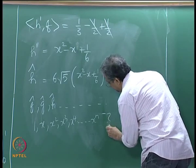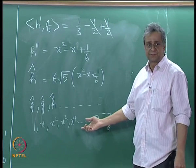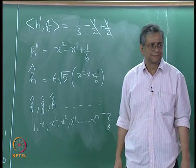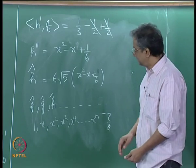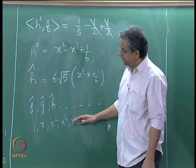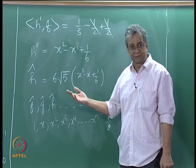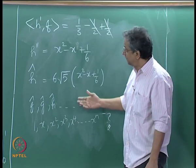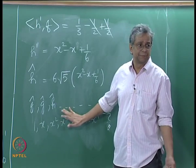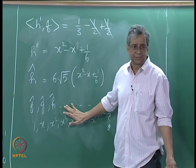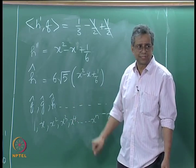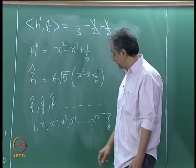If our function had a cubic variation and we took only the first three terms, we are unlikely to pick up that cubic variation properly. You can check what kind of error you would make. The other issue is just like in Fourier series — let us look at that briefly. I am not sure how many of you are familiar with Fourier series.